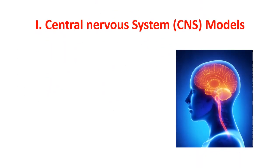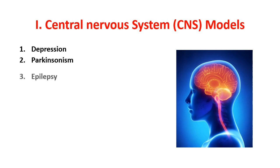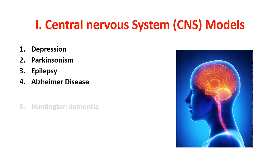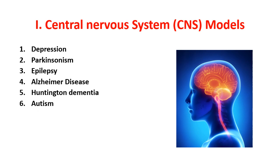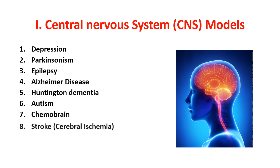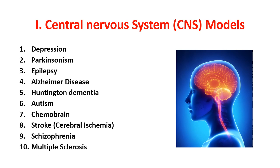First, the central nervous system models. We will discuss 10 models: number one, depression; number two, Parkinsonism; number three, epilepsy; number four, Alzheimer; number five, Huntington dementia; number six, autism; number seven, chemo brain; number eight, stroke or cerebral ischemia; number nine, schizophrenia; and number ten, multiple sclerosis.